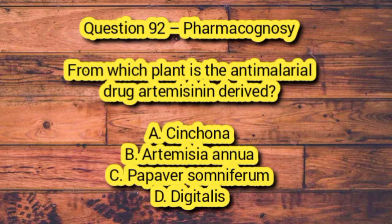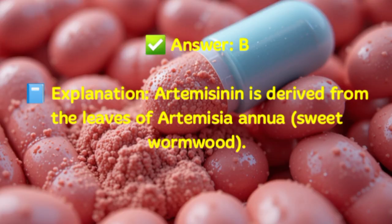Question 92 – Pharmacognosy. From which plant is the anti-malarial drug artemisinin derived? A. Cinchona. B. Artemisia annua. C. Papaver somniferum. D. Digitalis. Answer: B. Explanation: Artemisinin is derived from the leaves of Artemisia annua, or sweet wormwood.